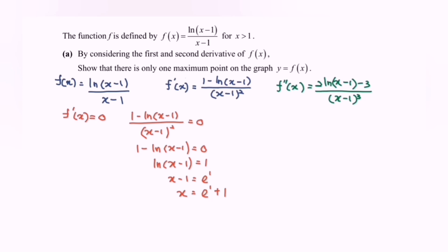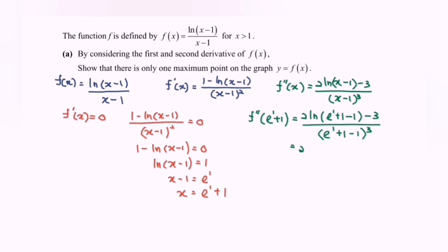Next, to show it is a maximum point, substitute x = e + 1 into the second derivative. f''(e+1) = [2ln(e+1-1) - 3] / (e+1-1)³ = [2ln(e) - 3] / e³. Since ln(e) = 1, this simplifies to (2 - 3) / e³ = -1/e³.